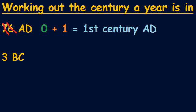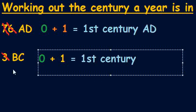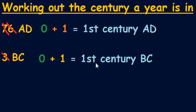It gets a little tricky when we've only got one number. We can only cross off one number since there aren't two there. But that still gives us 0, because we've crossed off every number that's there. We take that 0, add 1 to it, and work out that 3 BC is in the first century BC. It would be the same with any single-digit year.